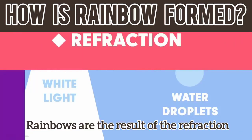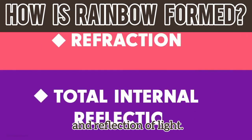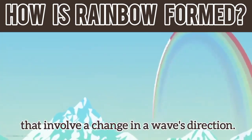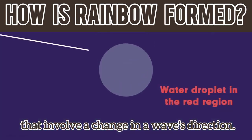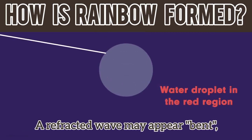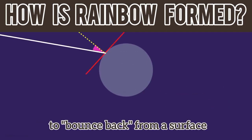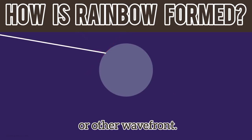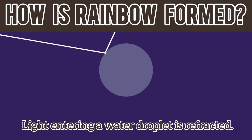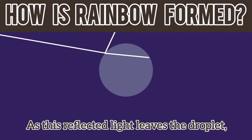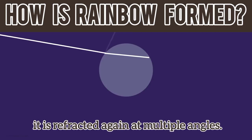Rainbows are the result of the refraction and reflection of light. Both refraction and reflection are phenomena that involve a change in a wave's direction. A refracted wave may appear bent, while a reflected wave might seem to bounce back from a surface or other wave front. Light entering a water droplet is refracted. It is then reflected by the back of the droplet. As this reflected light leaves the droplet, it is refracted again at multiple angles.